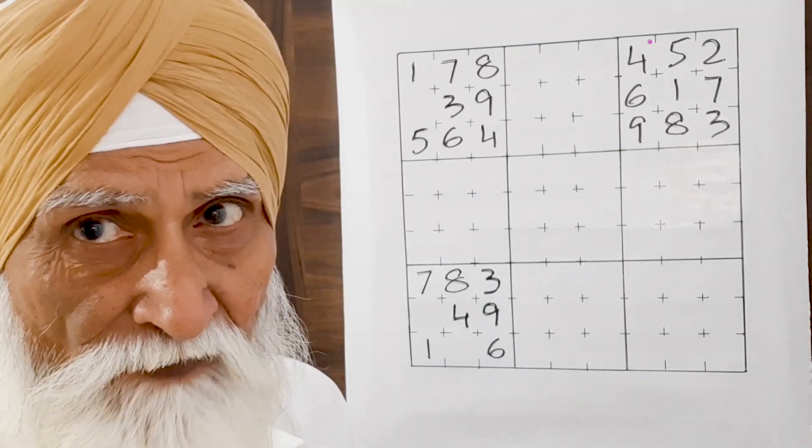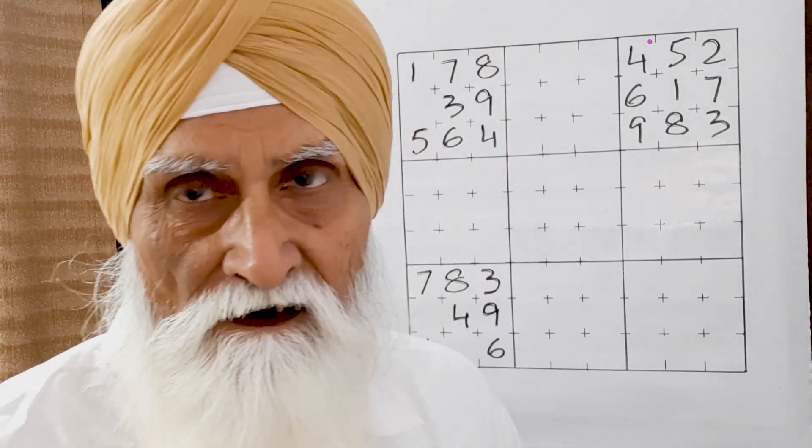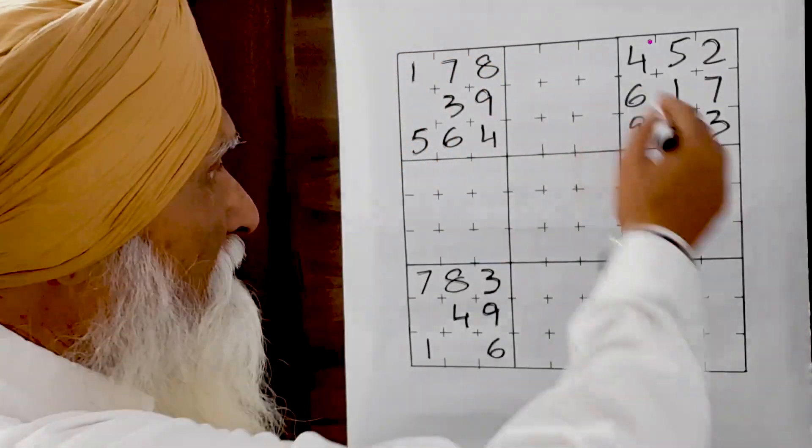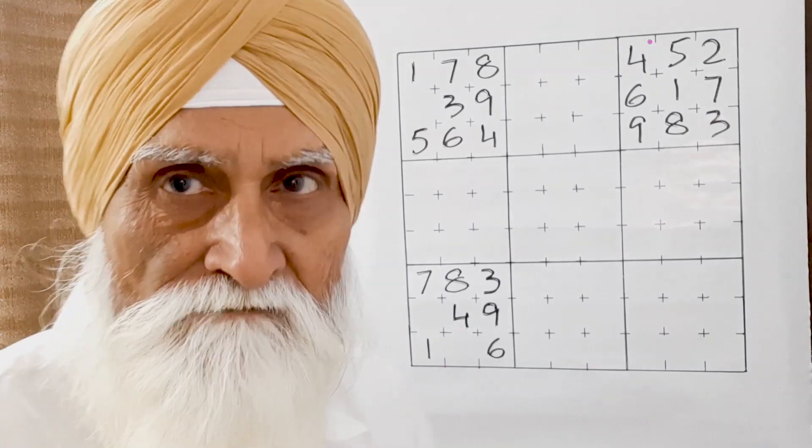As I have already explained to you, you have to take an A4 size sheet, draw a nine by nine grid, a blank grid, and get photocopies of it made.